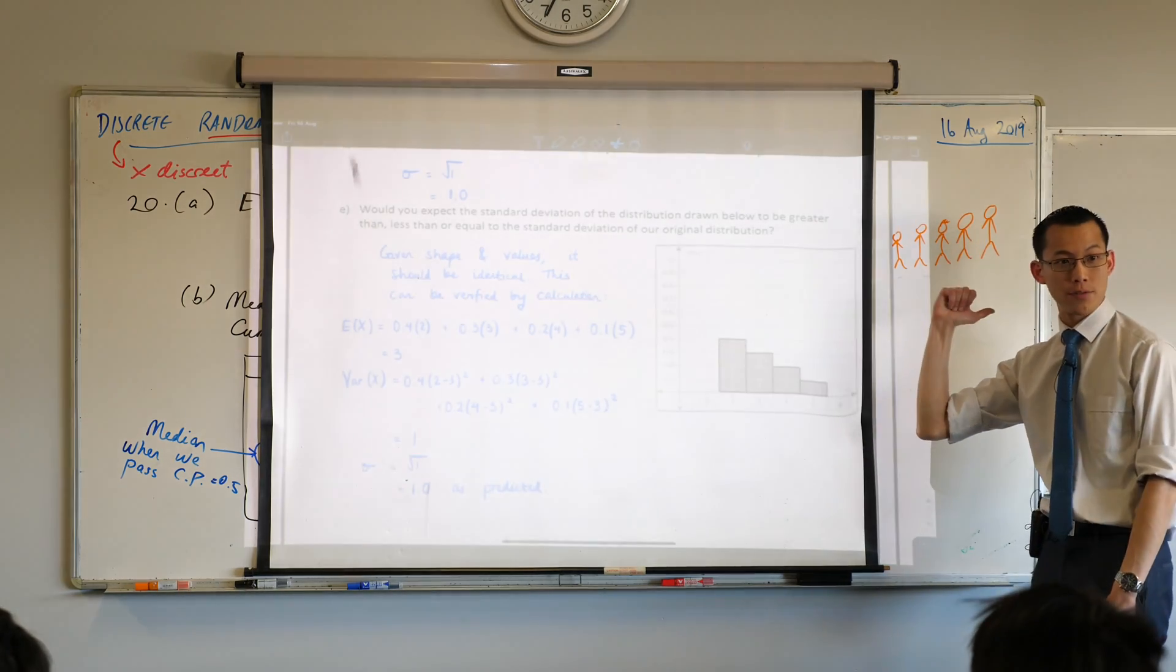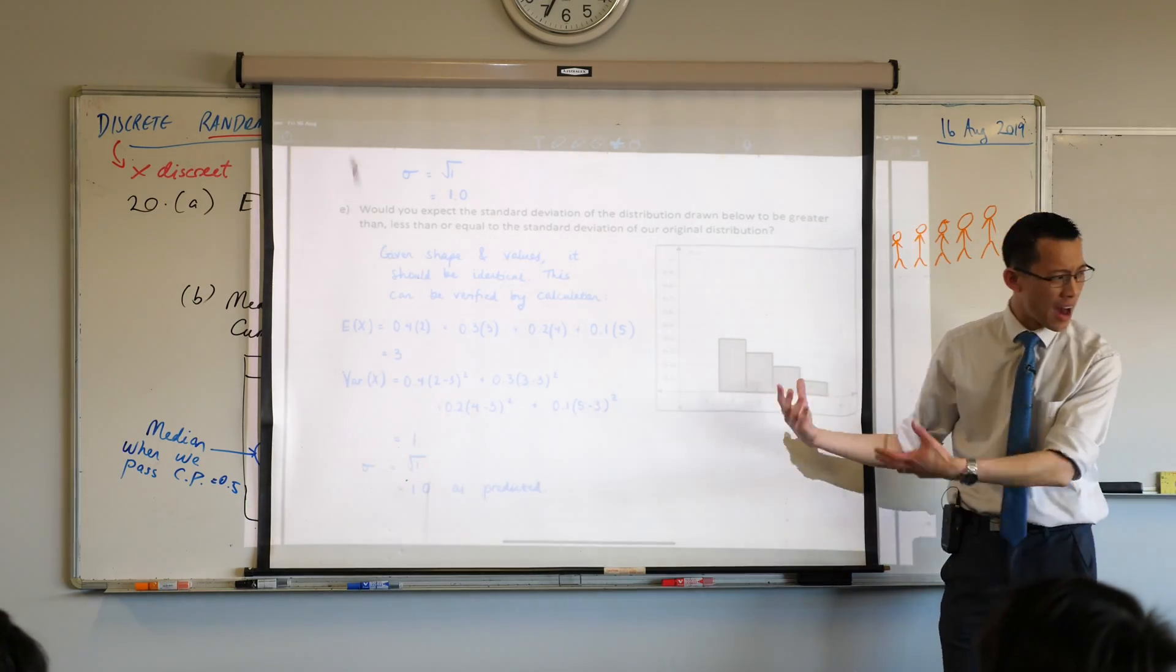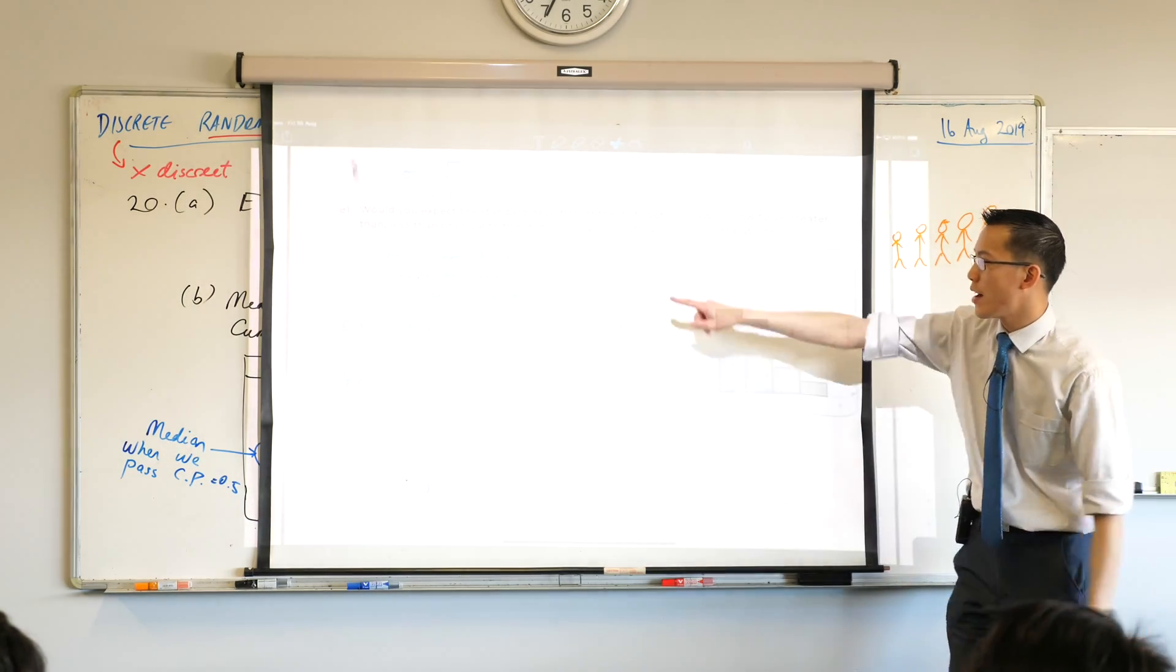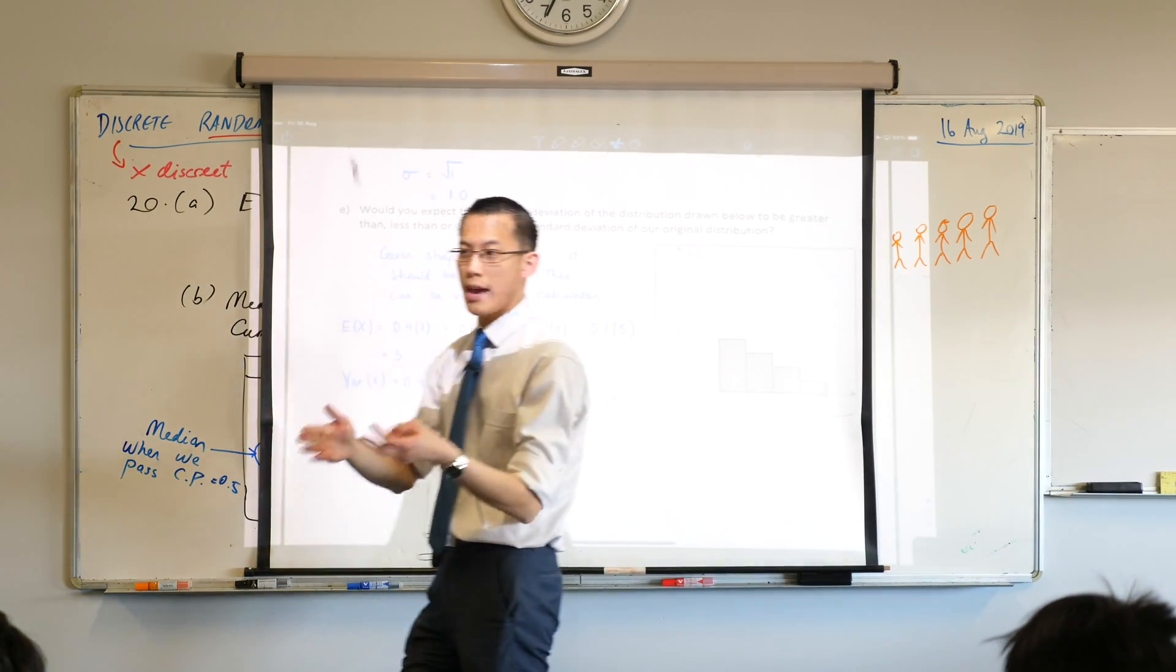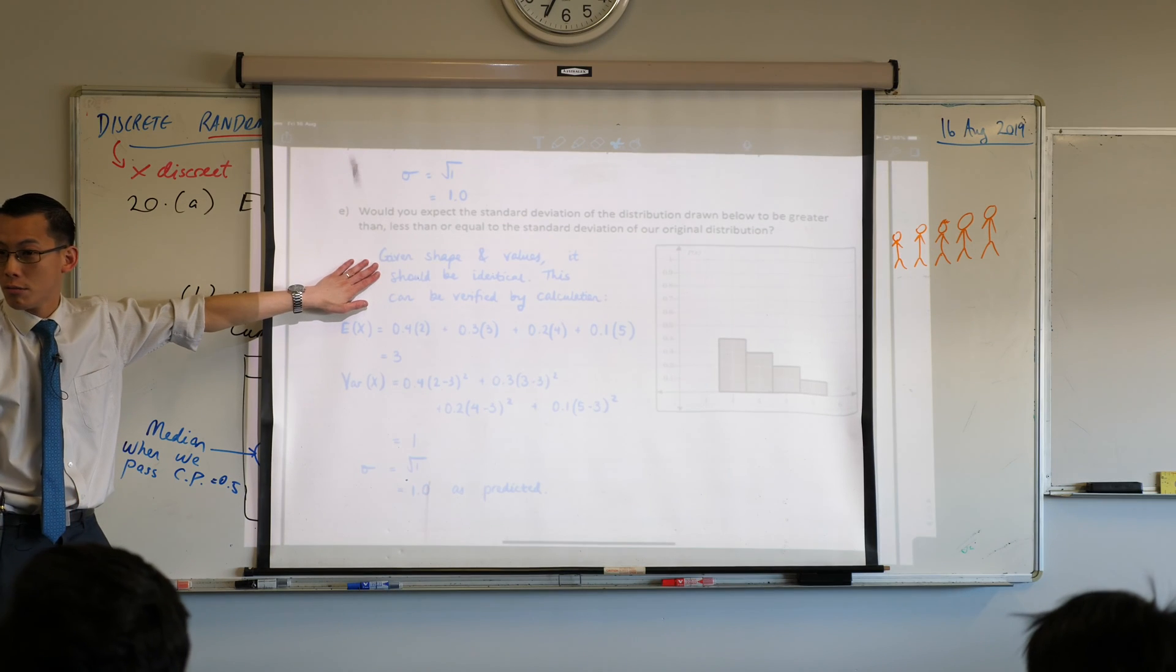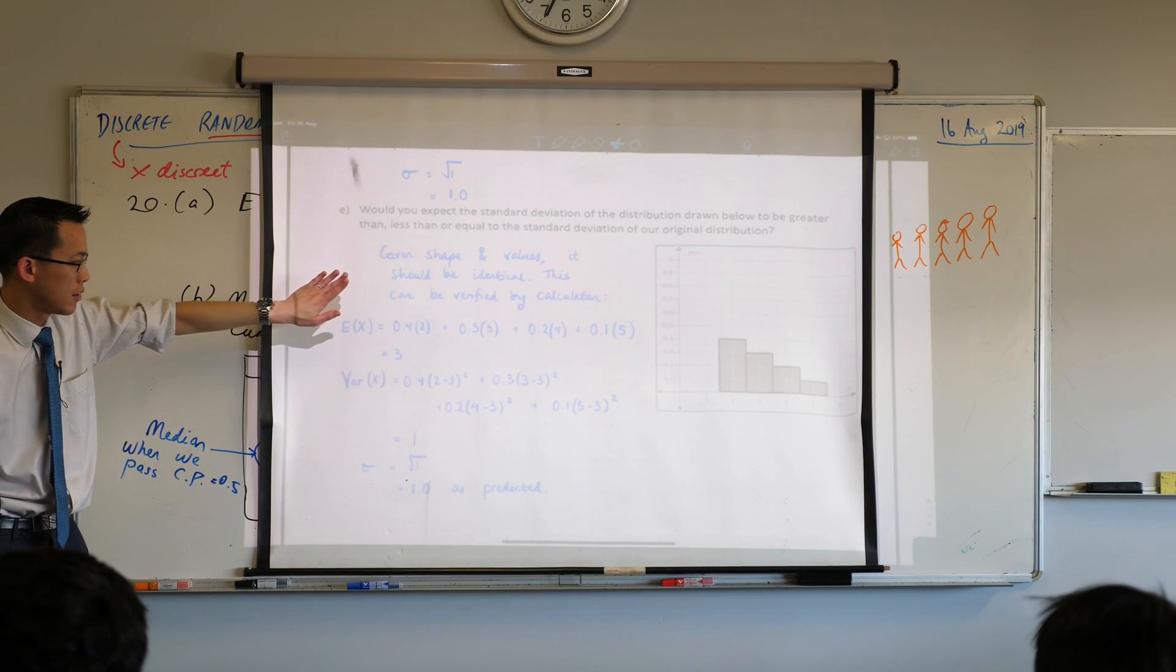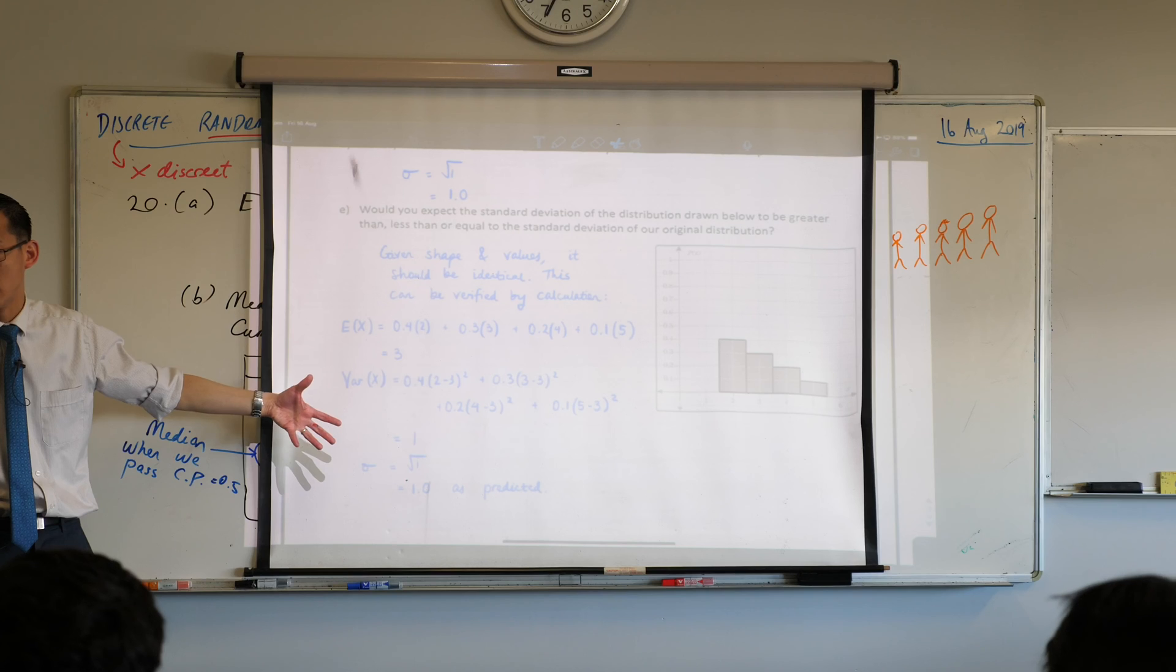This one here is positively skewed. It's where the tail is going. The tail is going this way. It's positively skewed. The one we started with was negatively skewed. But otherwise, look at the shape. They're identical, just backwards. So that's why you can see I've written, given the shape, and the values are the same. They're all 2, 3, 4, 5, etc. They should be identical. But then you can do the calculation. And you'll find exactly the same thing. Same expected value. Sorry. Different expected value, but the same variance, and therefore the same standard deviation.